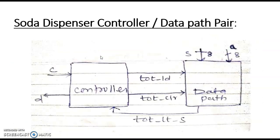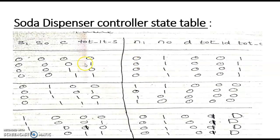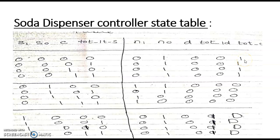The inputs to the controller that we have seen are C — the coin — and TOT_LTS, which come as inputs to this truth table. The outputs are: N1 and N0, which are the next state; D, which signals when soda is to be dispensed; TOT_LD, which should be 1 after doing the addition; and TOT_clear, which should become 1 at the start.